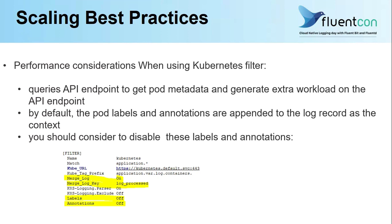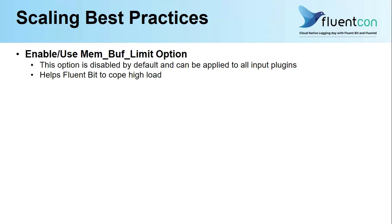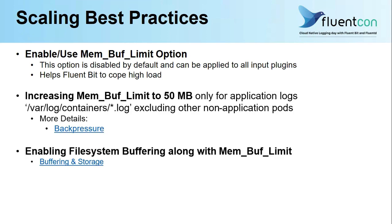You can consider disabling them whenever possible. The third thing you can do is use the memory buffer limit option in large clusters, which is disabled by default. Based on our testing, we recommend setting it somewhere between 50 megabytes to 100 megabytes based on the workload. There is a nice article called 'Backpressure' in the Fluentbit documentation, which explains this in detail and helps you determine the right value.